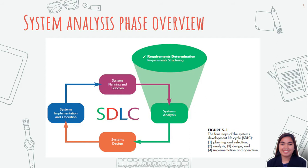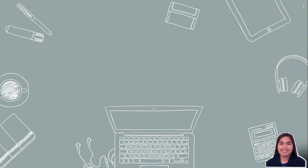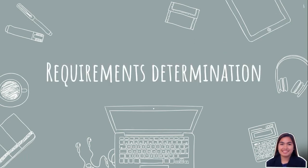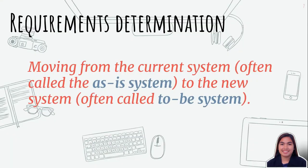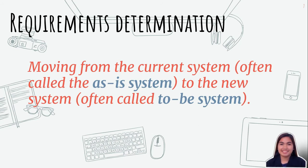Techniques used in Requirements Determination have become more structured over time. The system development process aids an organization in moving from the current system, often called the as-is system, to the new system, often called the to-be system.